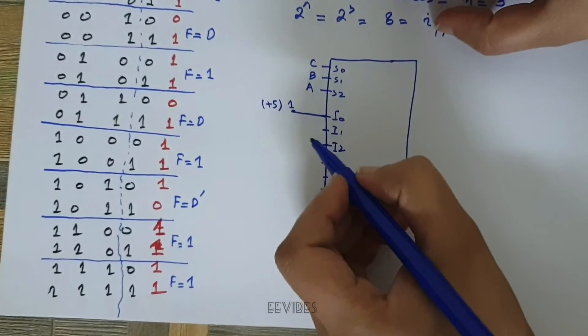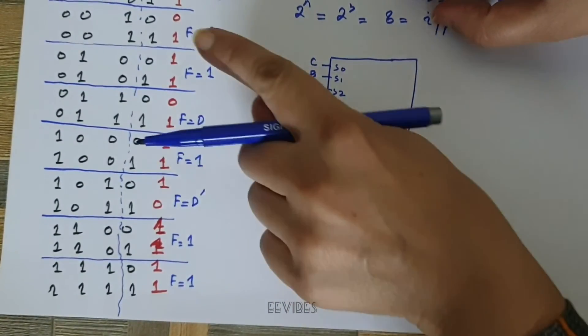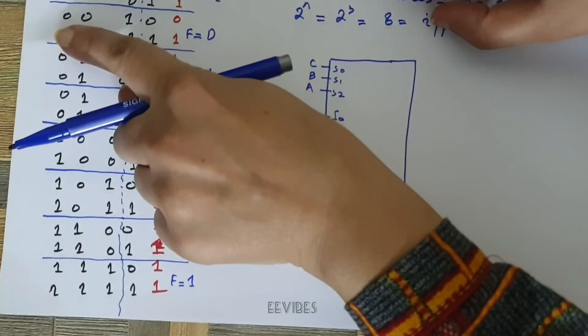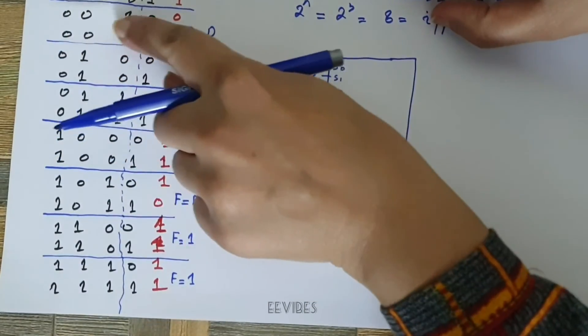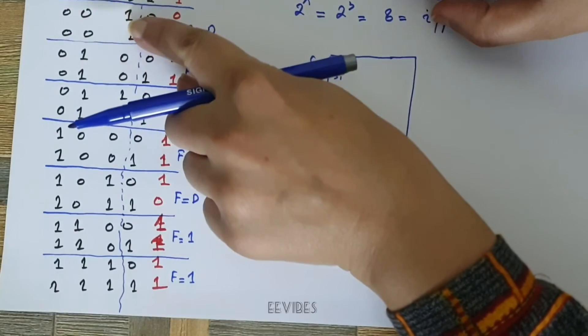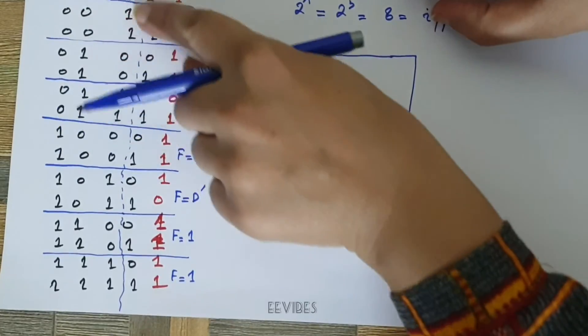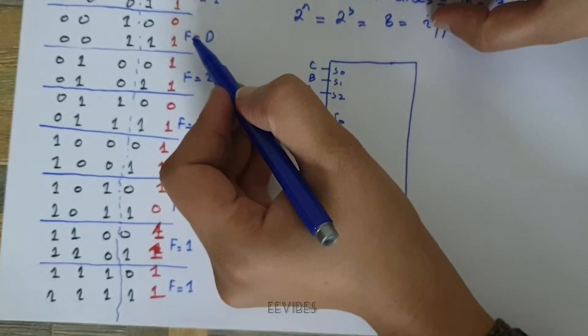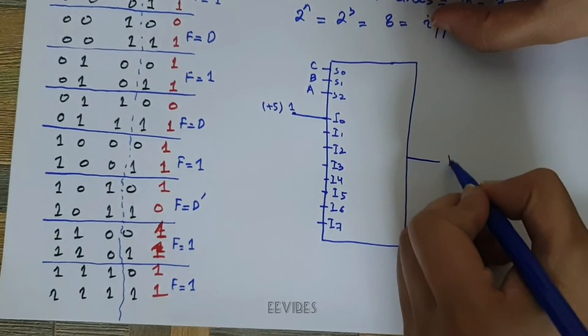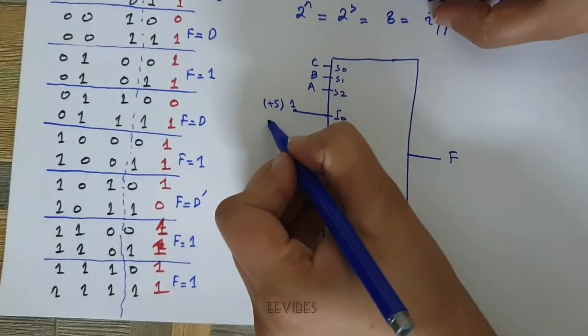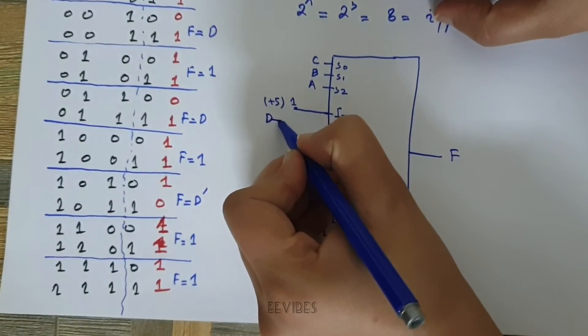Similarly, when you are having the first select line combination equal to 0, 0, 1, or the first select line to be selected, at that moment the function value F should be equal to D, so I will draw D input over here and I will pass it to I1 or connect it with I1.